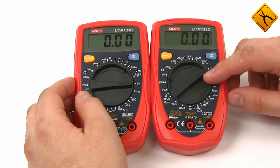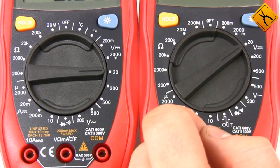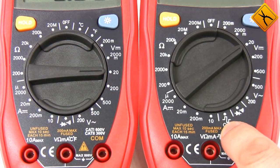However, the UT33D model has a wider resistance measuring range up to 200 megohm, while the UT33C has a range up to 20 megohm.